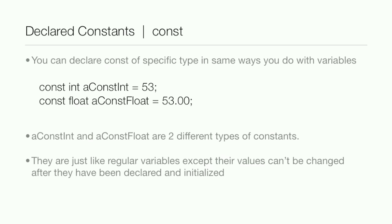A const int and a const float are two different types of constants. You're just adding const in between these two different types of declarations of variables. They're just like regular variables except their values can't be changed. That's what makes a constant so different from a regular variable. They can't be changed after they've been declared and initialized.